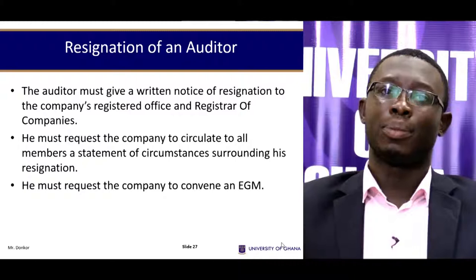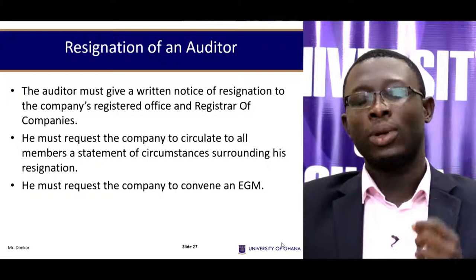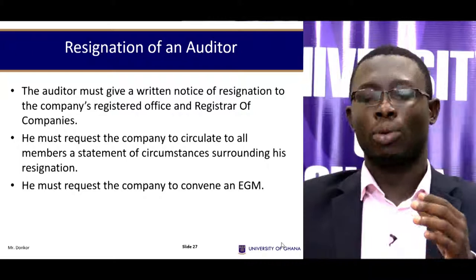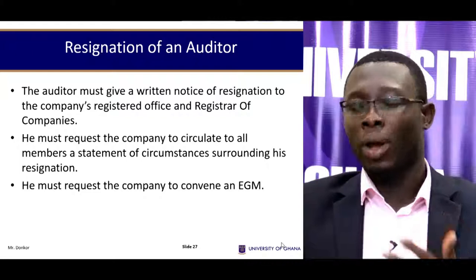The auditor has the power to resign based on the Companies Code Act 179. The auditor must give written notice of resignation to the company's registered office and registrar of companies. The auditor must also request the company to circulate to all members a statement of the circumstances surrounding the resignation.